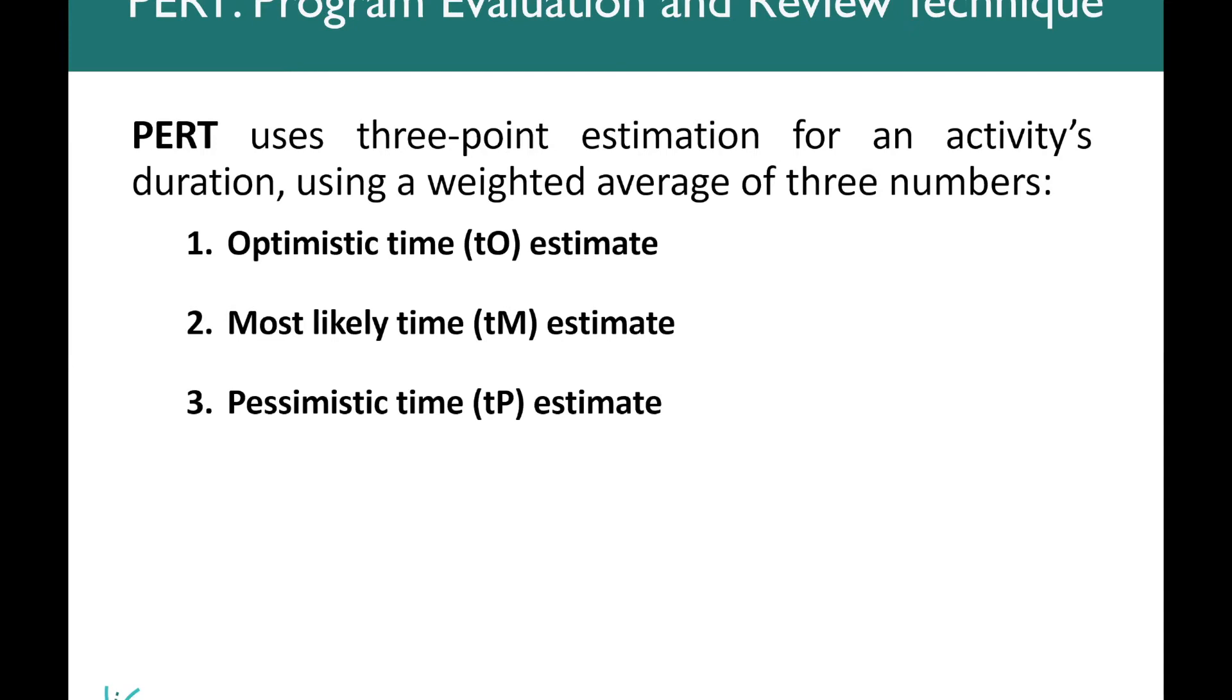PERT uses three-point estimation for an activity's duration, and it uses a weighted average looking at three different things. One being the most optimistic time. And so if everything goes as perfect as can be, this is going to be your most optimistic time estimate.